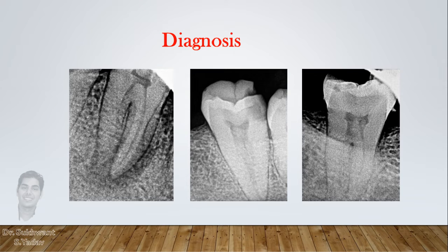Diagnosis is important. Before starting a case, you should know it can be a C-shaped canal, otherwise you will cause a lot of dentinal damage trying to locate orifices in the usual triangular pattern. Carefully observe the preoperative radiograph to determine whether the roots are fused. Fused roots with C-shaped canals may appear in any of several characteristic radiographic patterns.